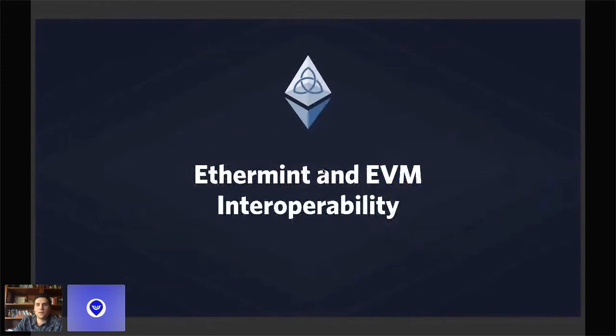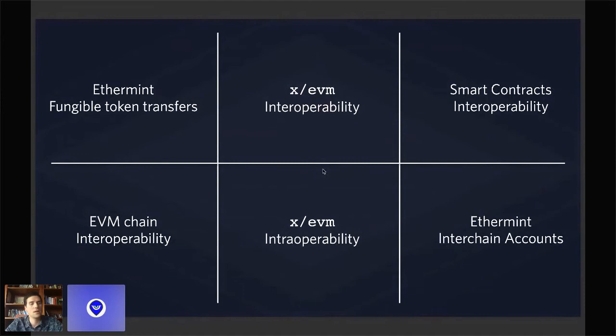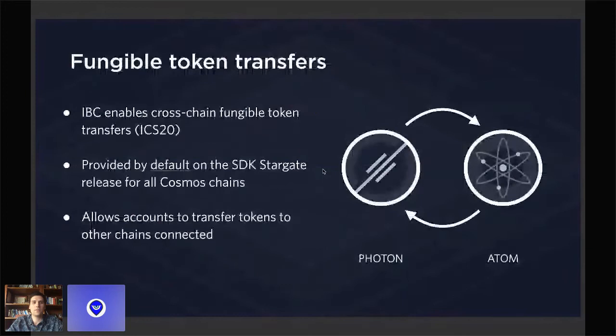Now let's go to the core of this presentation, which is Ethermint and EVM interoperability. There are six major components that could bring the Cosmos ecosystem and the EVM into Cosmos and vice versa: Ethermint fungible token transfers, EVM module interoperability, smart contracts interoperability, EVM chain interoperability, EVM module intraoperability — which is different from interoperability — and finally interchain accounts.